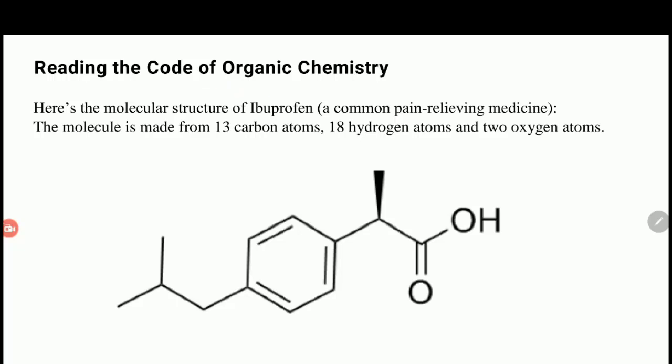Organic chemists use a code to represent molecular structures. You're going to learn how to read it. This molecule is ibuprofen - hoping you recognize that name, you've probably taken it. It's like aspirin. It has 13 carbons, 18 hydrogens, 2 oxygens. When you look at this picture...